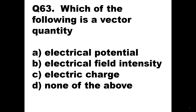Question number 63: Which of the following is a vector quantity? The options are electrical potential (voltage), electrical field intensity, electrical charge (in Coulombs), and none of the other. A quantity which has both magnitude and direction is electrical field intensity. So option B is the right answer: electrical field intensity is a vector quantity.